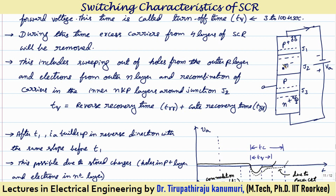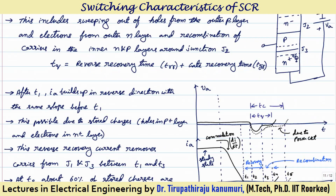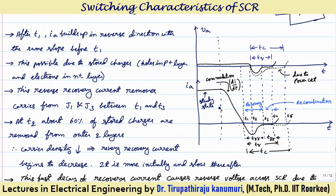Initially the steady-state current is Ia. Due to commutation, the current decreases from Ia toward the holding current. Because the circuit will not allow sudden change in current — due to inductance — the same rate of change of current continues and the current goes into the negative region. Even after current becomes zero, the trapped holes in the P region are attracted toward the negative terminal and electrons in the N region toward the positive terminal, causing a reverse current in the negative direction.